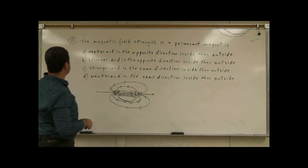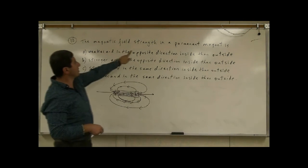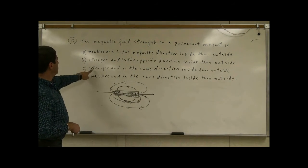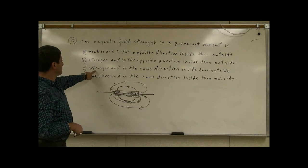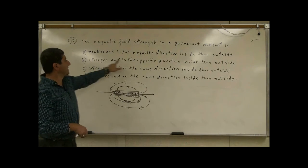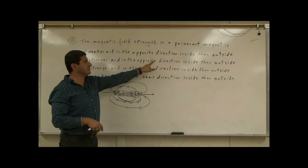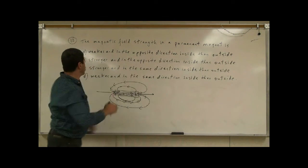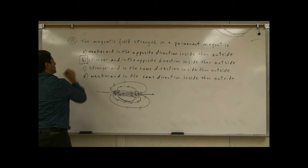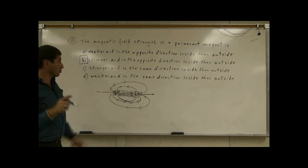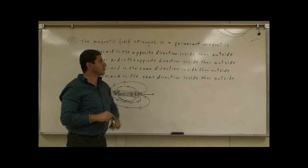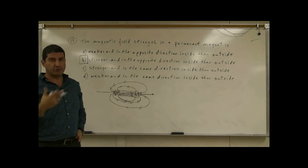So what is the right choice? The magnetic field strength in a permanent magnet is stronger and in the opposite direction inside than outside. So the choice is B. The field is stronger inside the magnet and it is in the opposite direction compared to outside.